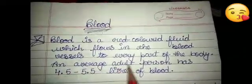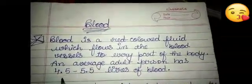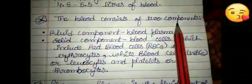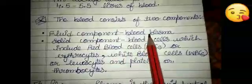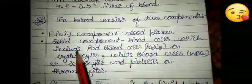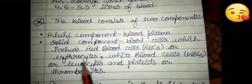An average adult person has 4.5 to 5.5 liters of blood. It consists of two components: a fluid component called blood plasma, and a solid component called blood cells, which include red blood cells (RBCs or erythrocytes), white blood cells (WBCs or leukocytes), and platelets or thrombocytes.